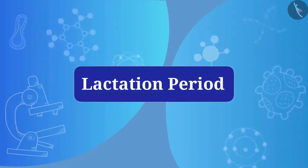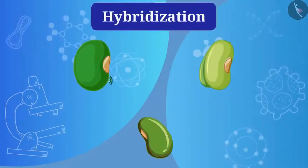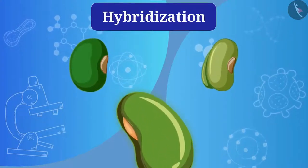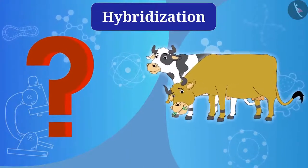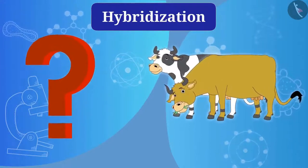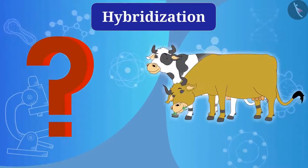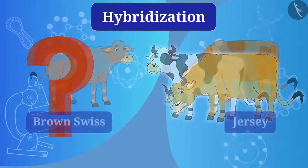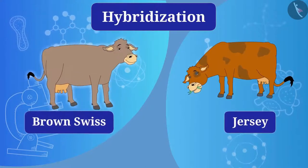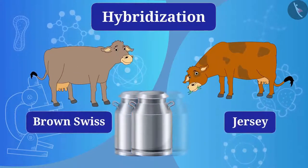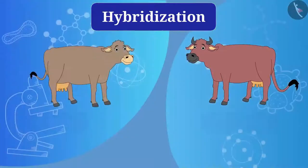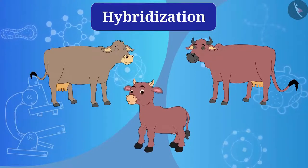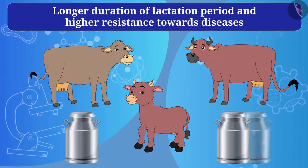We have known that through hybridization, crops of desired properties can be obtained. Can hybridization be possible in animals as well? Yes, hybridization is also possible in animals. For example, Jersey and Brown Swiss are species with high lactation period, and Red Sindhi and Sahiwal are species with high immunity. If both breeds are crossed, the calf will have both properties — a longer duration of lactation period and higher resistance towards disease.